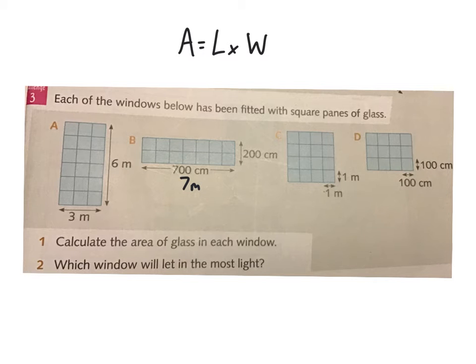So I'm going to change 700 centimeters to 7 meters and 200 centimeters to 2 meters, because that's a much easier multiplication sum. You're much less likely to make a mistake with that one.